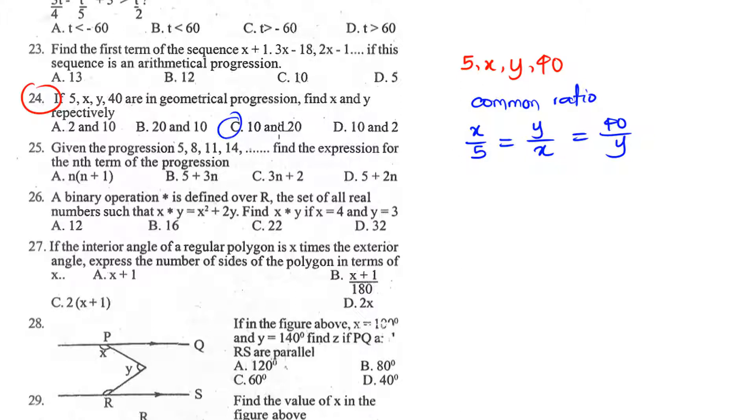If you have to take the first two entries, if you say x over 5 is equal to y over x, we can cross multiply, so that we have 5y is equal to x squared. Or, we can say that y is equal to x raised to power 2 over 5.